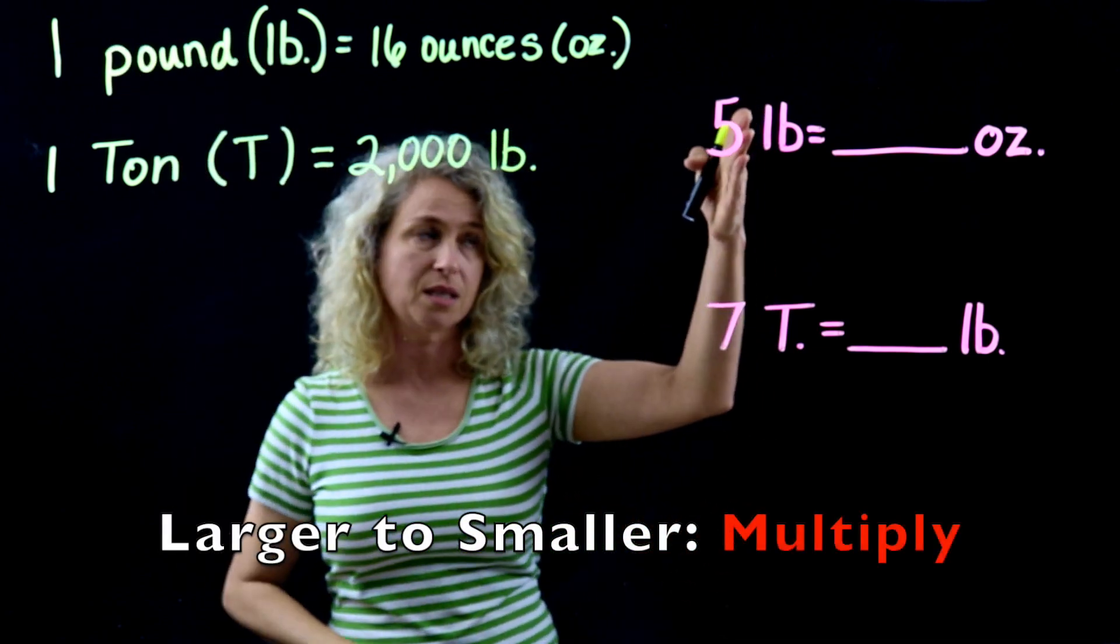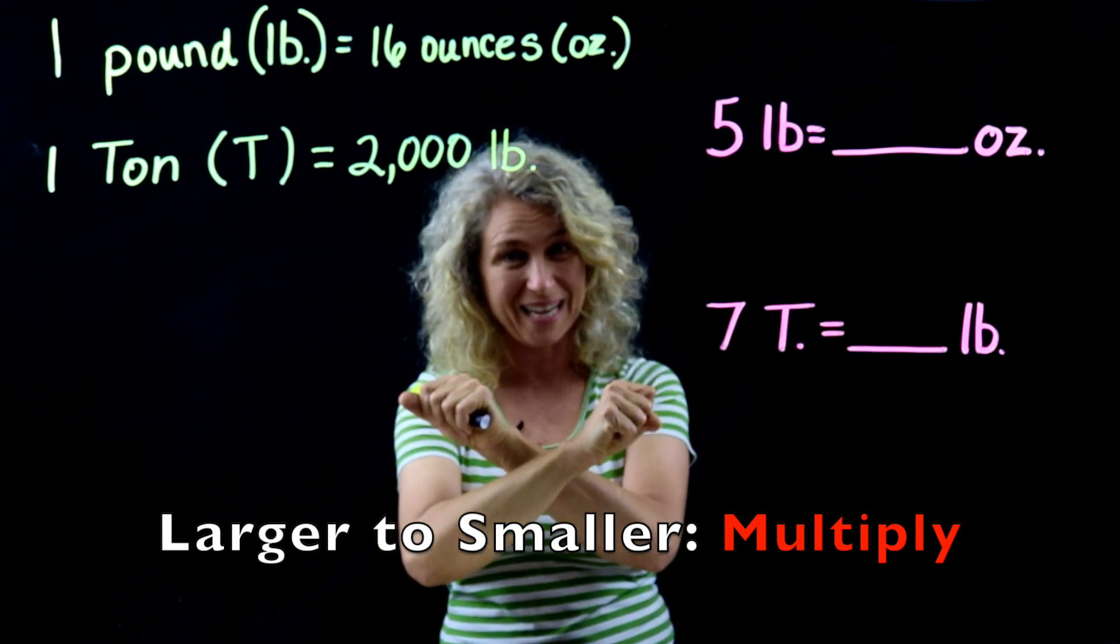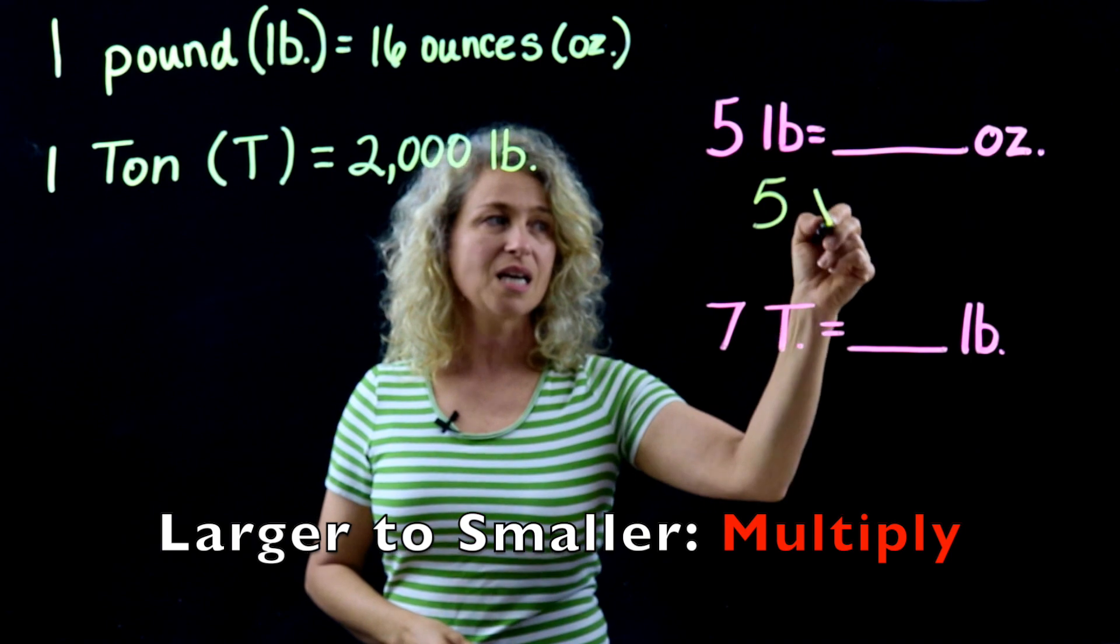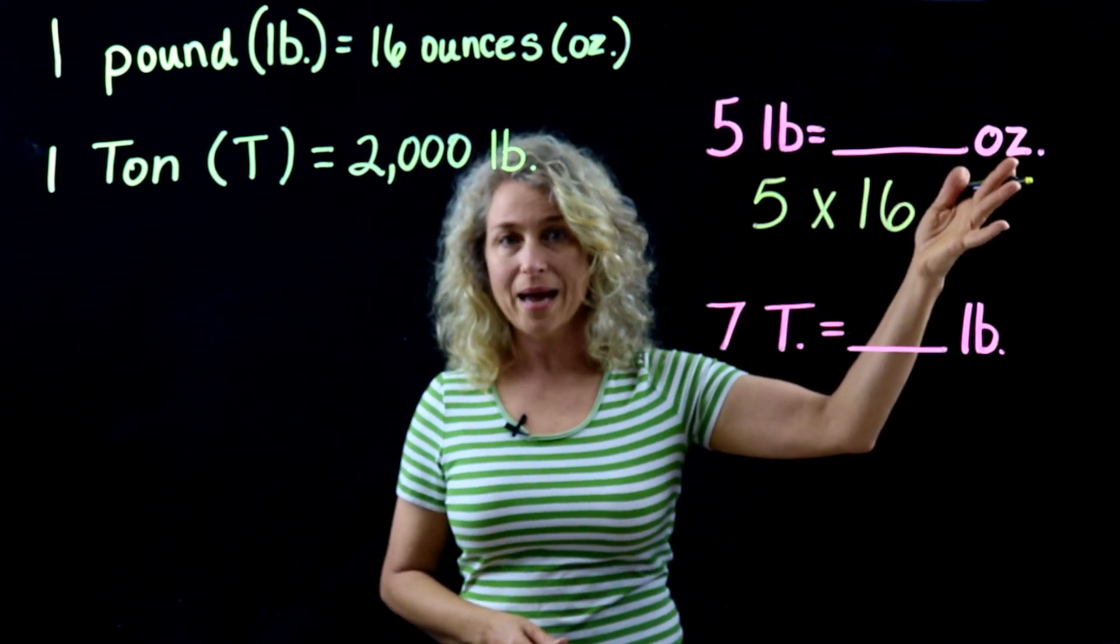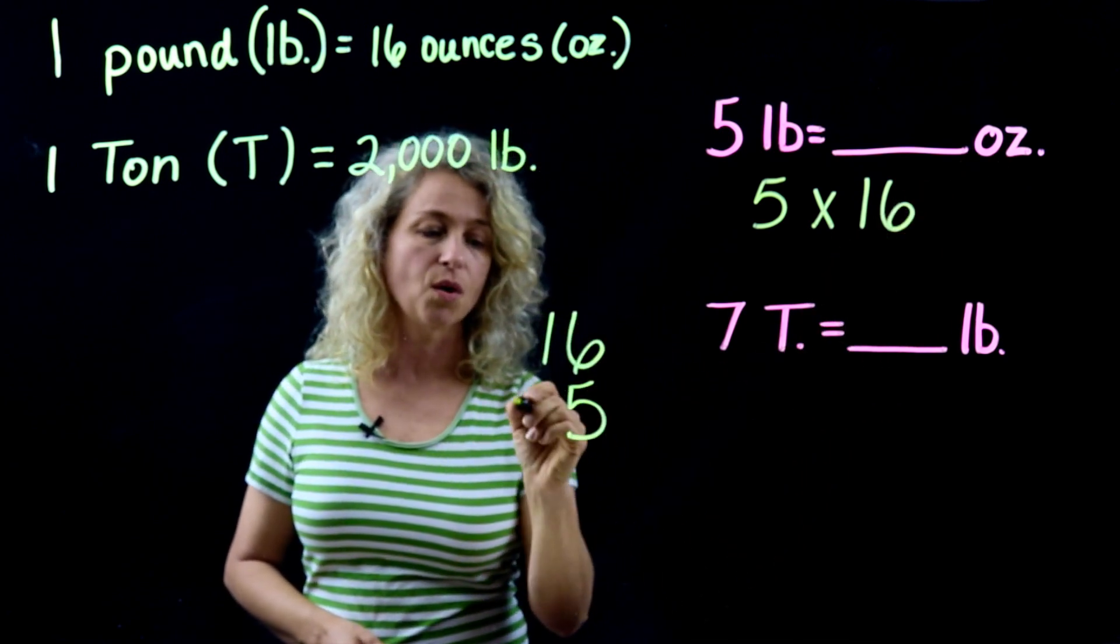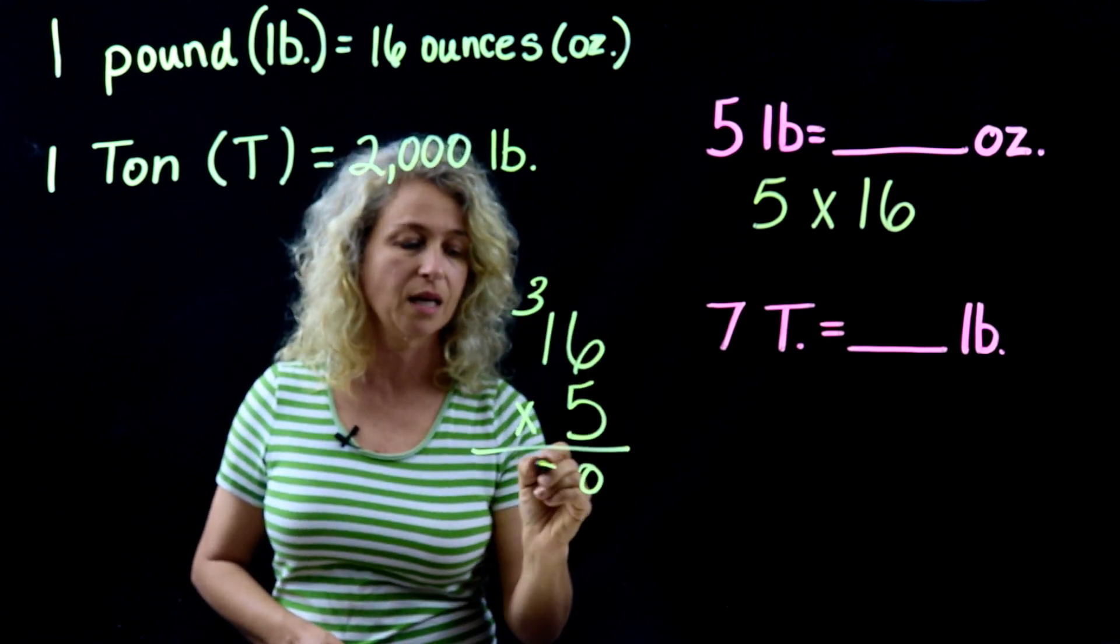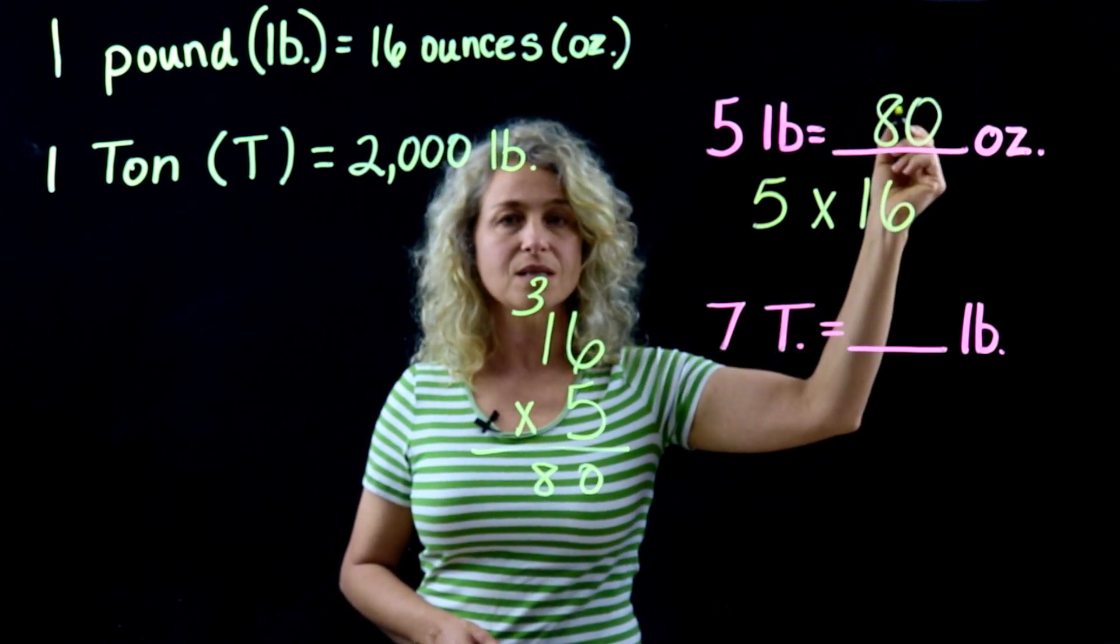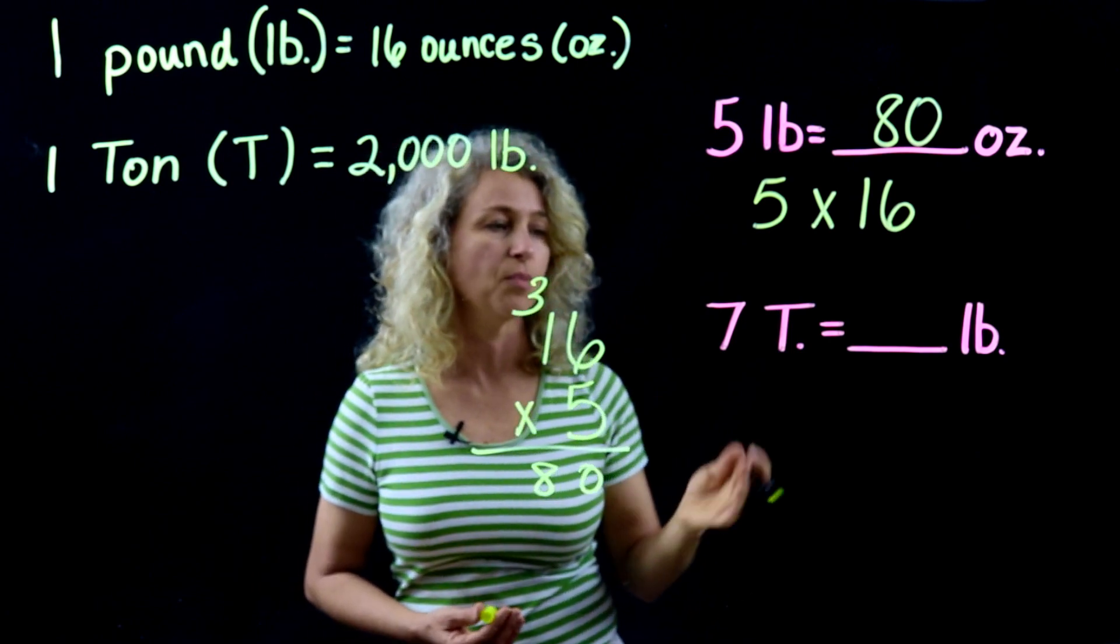Okay, so all you do is 5 times, and there are 16 ounces in a pound. Now you can come over to the side and work your multiplication. 5 times 6 is 30, carry the 3, 5 times 1 is 5, plus 3 is 8, so 80. Five pounds equals 80 ounces.